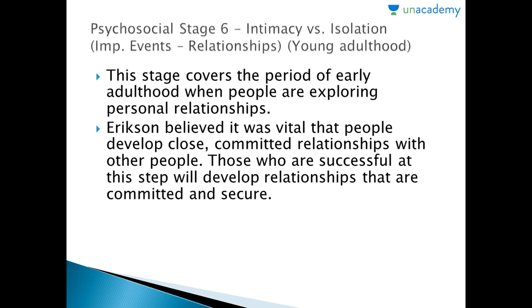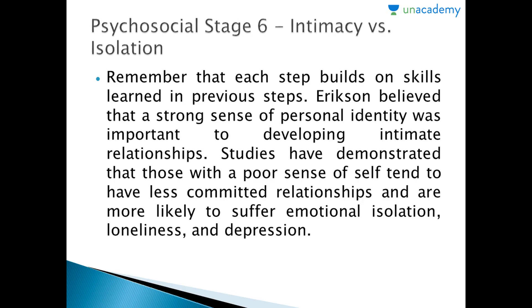Stage 5 is identity versus role confusion, seen in teenagers. The adolescent learns how to answer satisfactorily the question of who am I and what shall I become. Stage 6 is intimacy versus isolation, seen in young adulthood. This stage covers early adulthood when people are exploring personal relationships. Erikson believed it was vital that people develop close, committed relationships. Those who are successful will develop relationships that are committed and secure, and experience true intimacy — the sort that makes possible a good marriage or a genuine and enduring friendship.